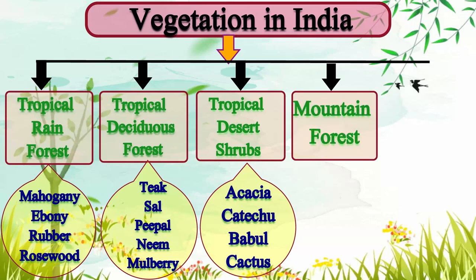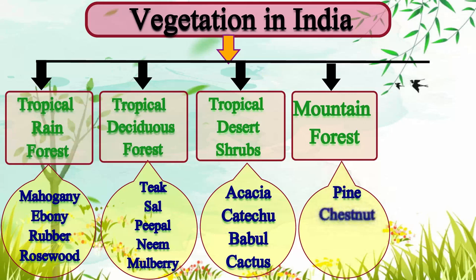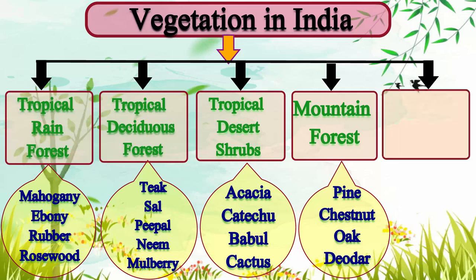The mountain forests: the chief vegetation includes pine, chestnut, oak and deodar.